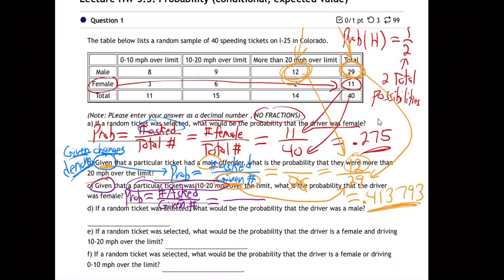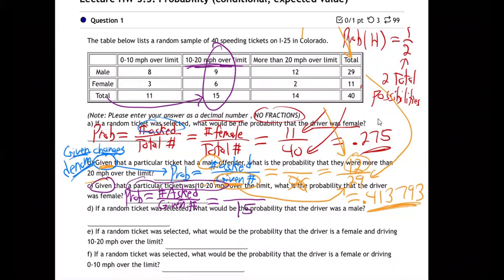So we're supposed to go up to the group of tickets that are 10 to 20 over. Let's go up to the table. So would the total in this one be 15 and not 11? Yes — there it is right there. There's the group of tickets that are 10 to 20 over — the total number of tickets that are 10 to 20 over is 15.